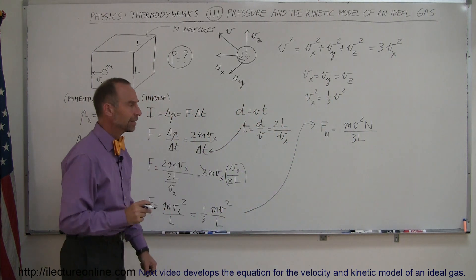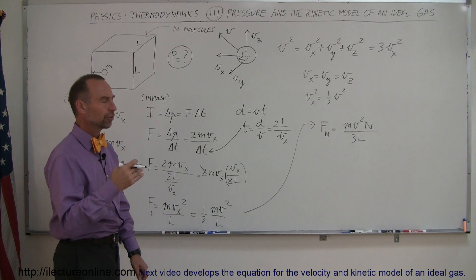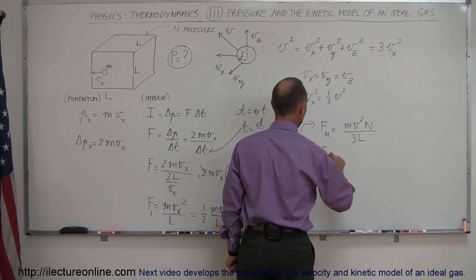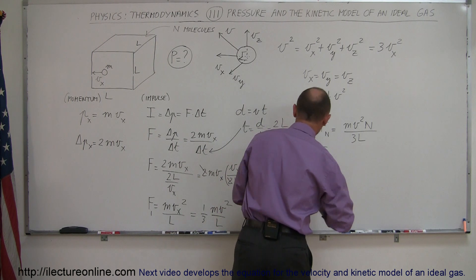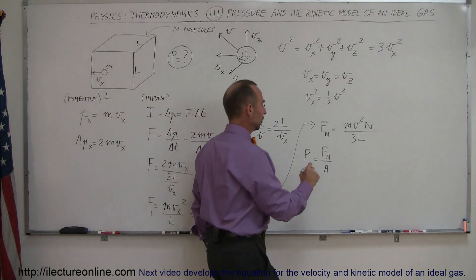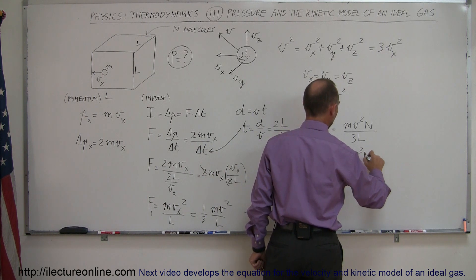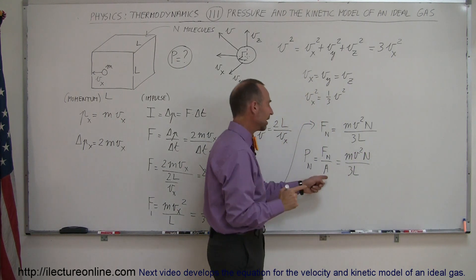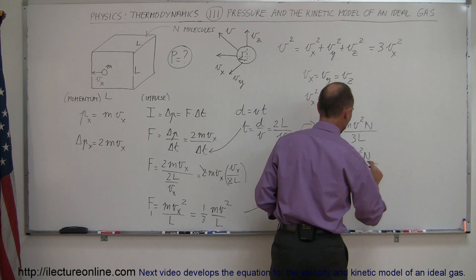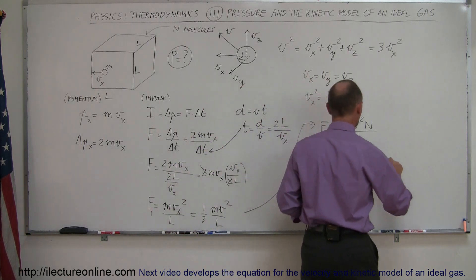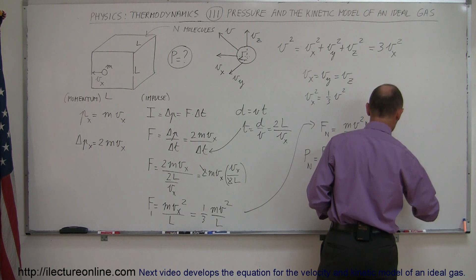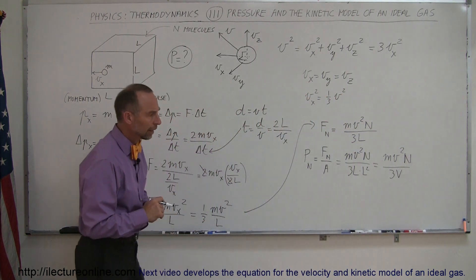Pressure equals force divided by the area over which those molecules act — the area of one complete side of the box. So pressure equals Nmv² divided by 3L, divided by the area L². Since L times L² equals L³, which is the volume of the box, pressure equals Nmv² divided by 3 times the volume.